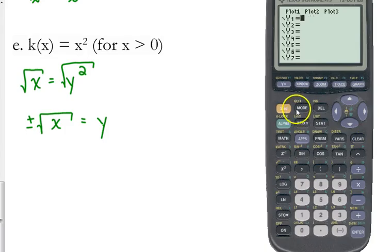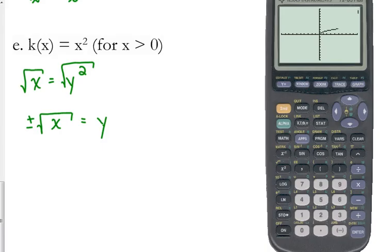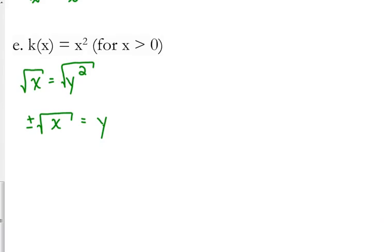Okay, if we graph the positive square root of x, you're familiar with what that looks like. Okay, because we've talked about this a little bit. And if we graph the negative square root of x, if I graph those together, is that a function? No, it does not pass the vertical line test. So we either have to consider just the positive or just the negative.